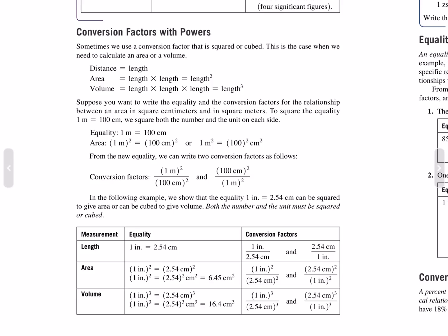To square the equality 1 meter equals 100 centimeters, we square both the number and the unit on each side. The result is: 1 square meter equals 10,000 square centimeters. From this new equality we can write two conversion factors: 1 meter squared per 10,000 centimeters squared, and 10,000 centimeters squared per 1 meter squared.